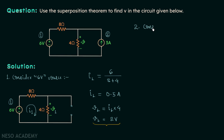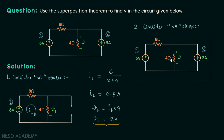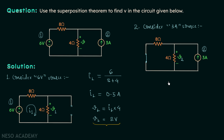Now we will find the voltage across the 4 ohm resistor due to the 3 ampere source. This time we consider the 3 ampere source and turn off the 6 volt source by short circuiting it. We modify the network accordingly — removing the voltage source and replacing it with a short circuit — and rename the voltage as V2.